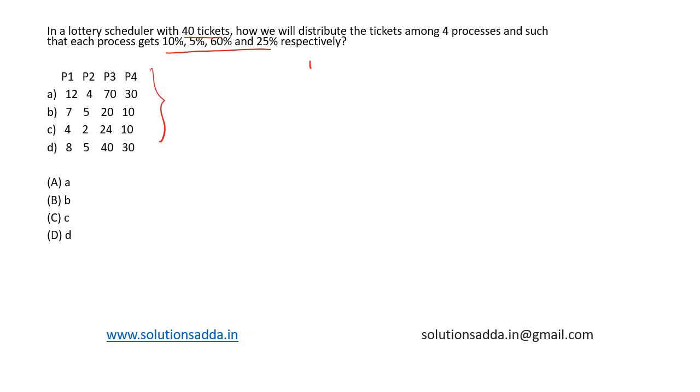So we have 40 tickets and the processes are p1, p2, p3, and p4. P1 gets 10%, p2 gets 5%, p3 gets 60%, and p4 gets 25%.